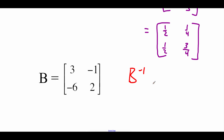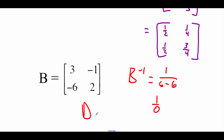Checking out the inverse of matrix B: again we do 1 over AD minus BC. A times D is 3 times 2 equals 6, and B times C is negative 1 times negative 6 equals 6. So this gives 1 over 0. We can stop right here — we can't divide by 0, so matrix B does not have an inverse. That's going to be it for this video. Please remember to fill out the Google form linked in the description below. Thanks for watching.